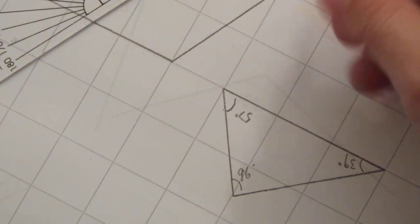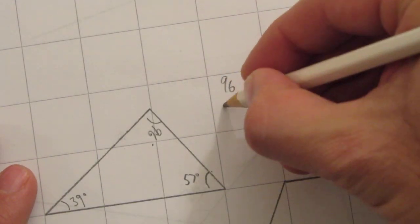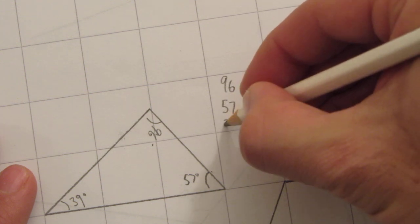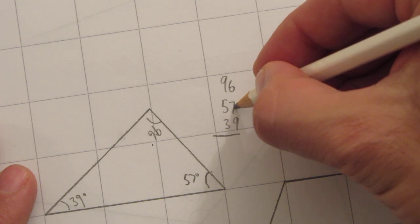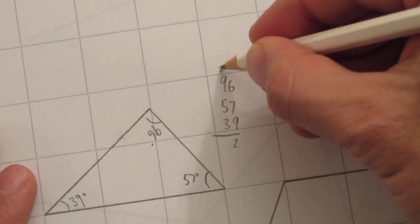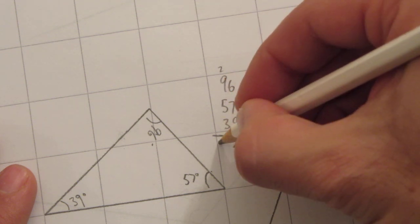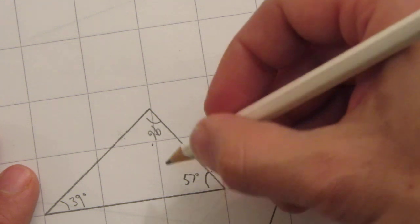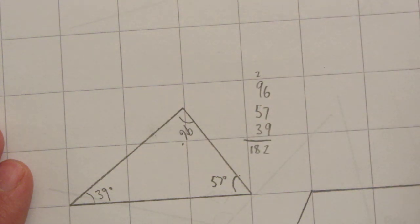See what happens: 96 plus 57 plus 39. 6 plus 7 is 13, plus 9 is 22. 2 plus 9 is 11, 16, 18... 182. So somewhere we're one or two degrees out, but that's because we were measuring by eye.